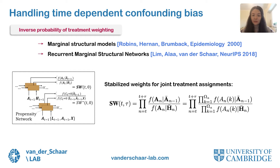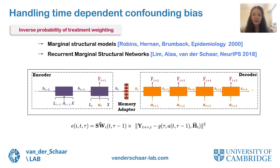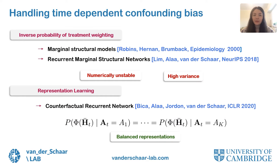Recurrent marginal structural networks use recurrent neural networks to estimate the probability of treatment at time step t given the past history of treatment, and also the probability of treatment at time step t given the entire patient history. These are then used to compute stabilized propensity weights, which in turn are used to weight the loss function of a sequence-to-sequence model that can forecast counterfactual trajectories. However, using inverse probability of treatment weighting may result in high variance estimates due to extreme weights and is also numerically unstable when the treatment probabilities are very small.